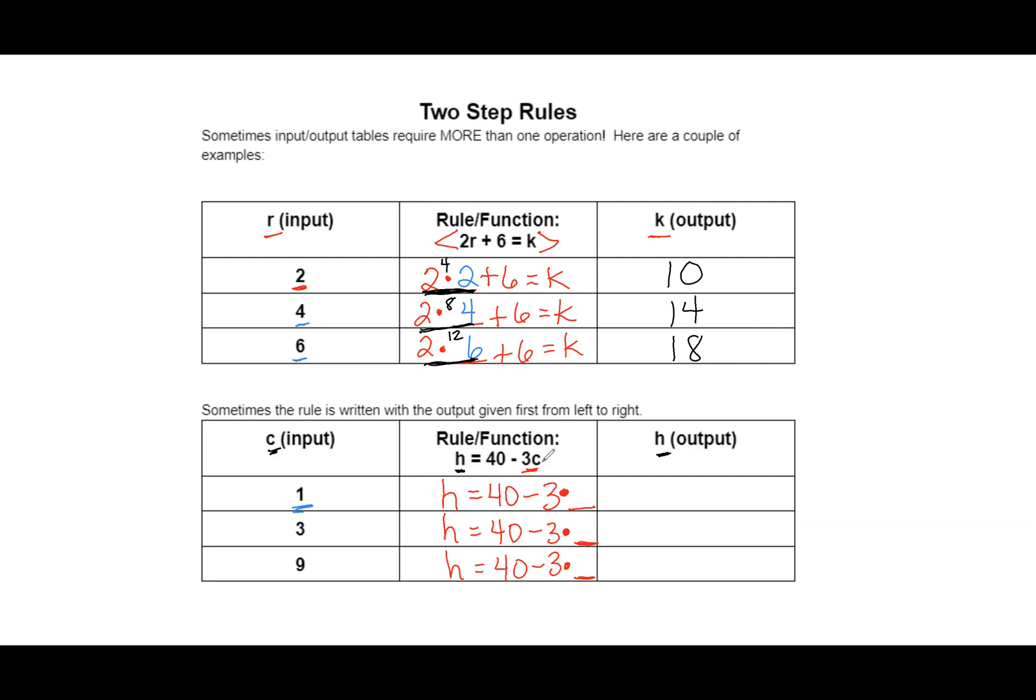H equals 40 minus 3 times C, whatever C is. And we'll just go back through and replace the C with what the input is over here. For that first one, we're replacing that C with the number 1. For the second one, you're replacing that C with the number 3. And that last one, you would replace C with 9. Then all we have left to do is to actually solve it. We're going to multiply 3 times 1. That would give us 3. And we know that 40 minus 3 is 37.